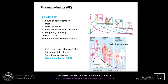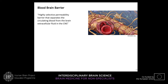Important pharmacokinetic properties of a drug include the lipid-water partition coefficient, which indicates how hydrophobic or hydrophilic it is; plasma protein binding; and stability once absorbed. A particularly important parameter in neuropharmacology is whether the drug can cross the blood-brain barrier — the highly selective permeability barrier that separates circulating blood from the brain extracellular fluid in the central nervous system.